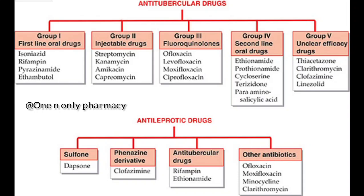Moving to the next topic — anti-leprotic drugs, used in the treatment of leprosy. The first class is sulfone derivatives, with one drug: Dapsone. The second class is phenazine derivatives, with one drug: Clofazimine. Additionally, some anti-tubercular drugs are also used as anti-leprotic drugs — specifically Rifampin and Ethionamide.